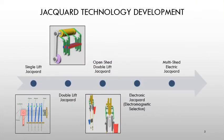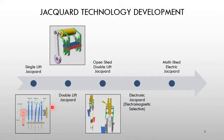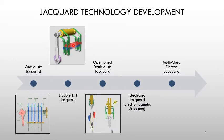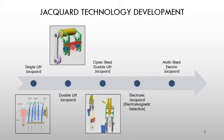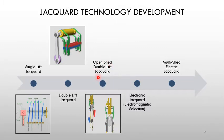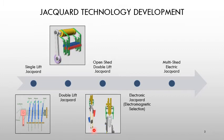We already know that jacquard technology has developed over time. The first method of jacquard technology was the single lift method, in which we had one hook attached for one harness cord. Then we had the double lift system, where for one cord there are two hooks and two knives.